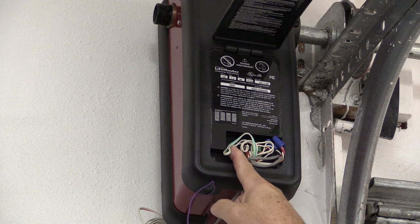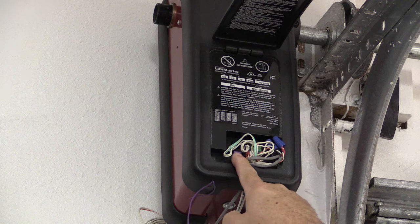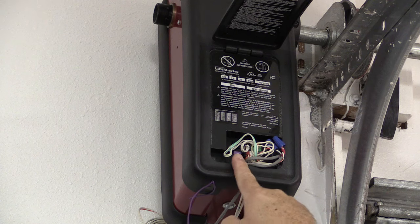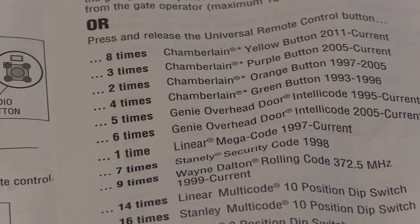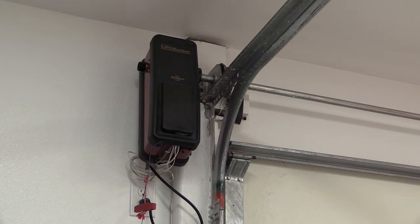On this 3800 operator, you can see that the learn button is purple. Simply press the learn button. Look at your instructions. It'll tell you for a purple learn button, you're going to push the remote control three times.